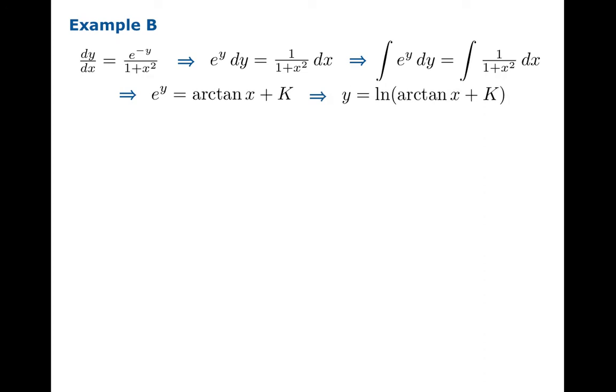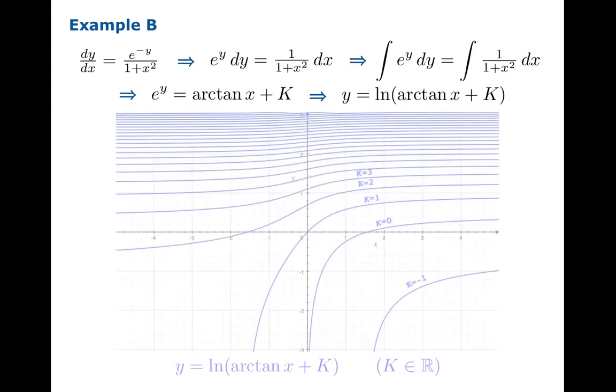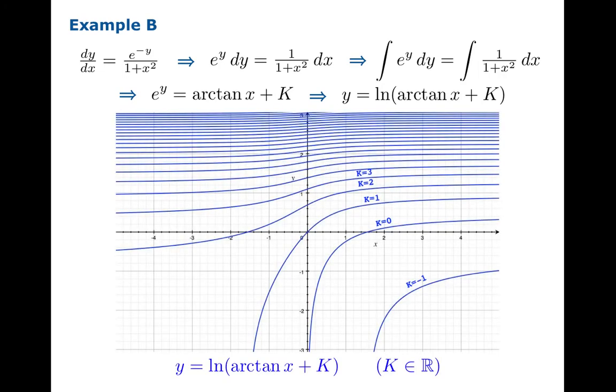And once again if you plot these solutions for various values of k, you get a rather pretty picture. This is another example of a so-called foliation of the plane.